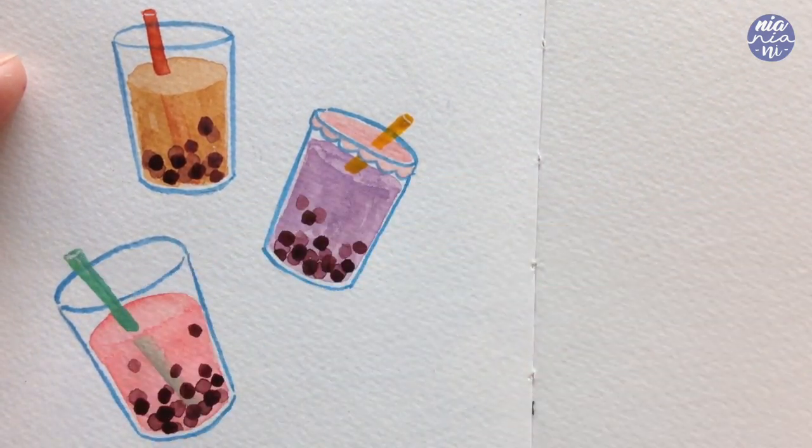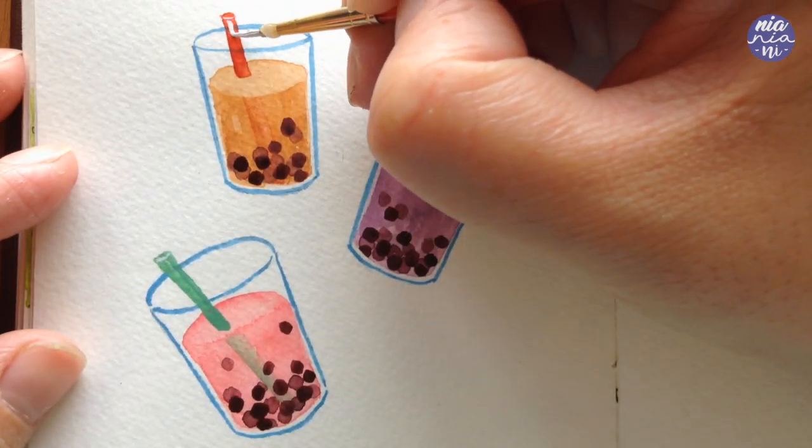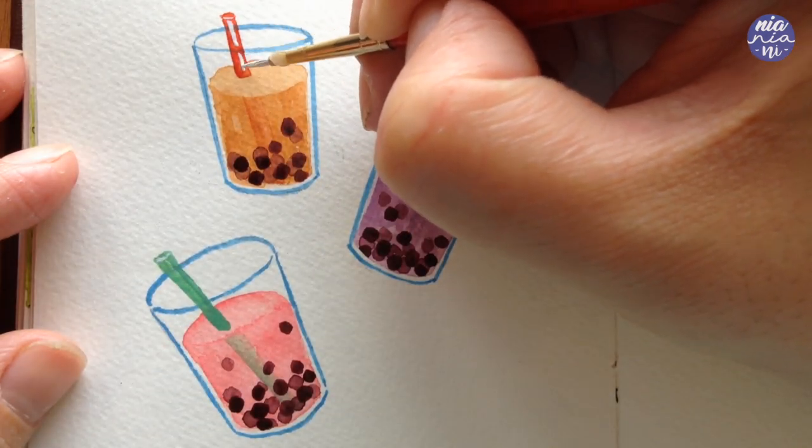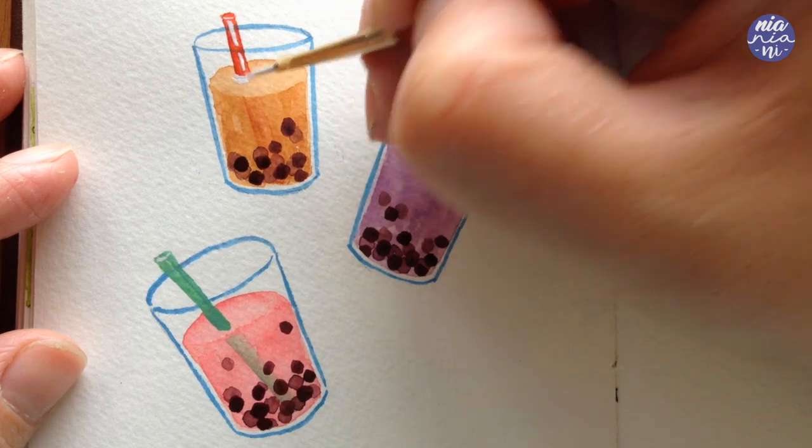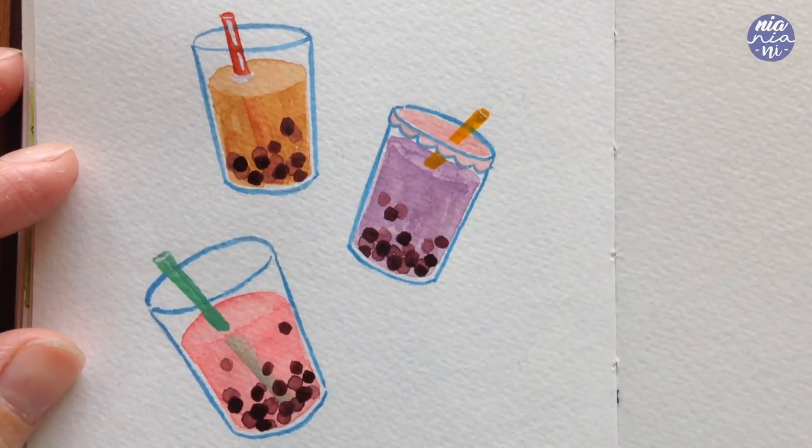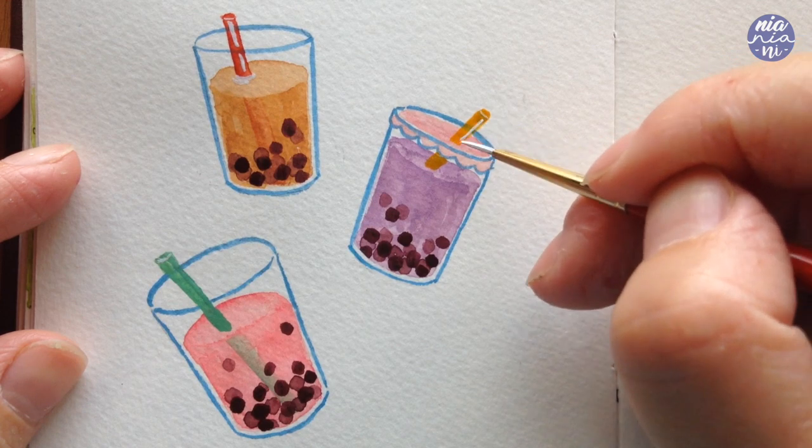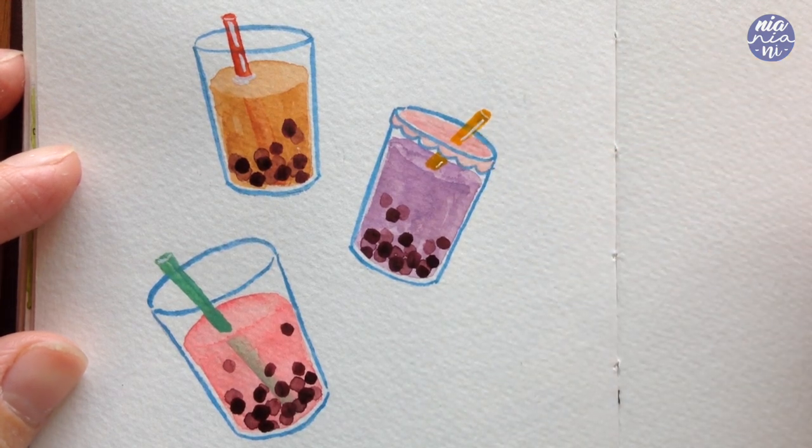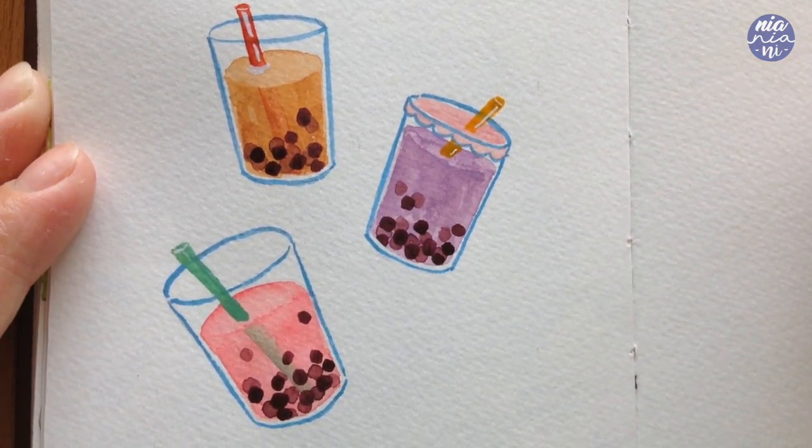But because depending on your brush you can really control how much white or how little you want to put in, I find that it's just much more of a flexible medium if you use gouache and your brush. But if you're new to watercolor, it's fine just to use white pen.